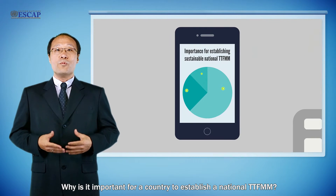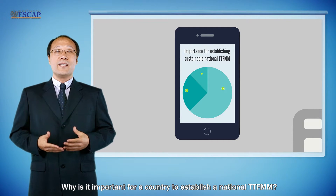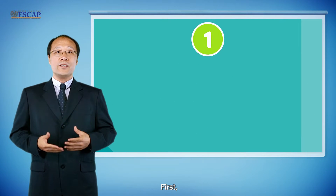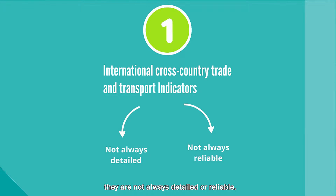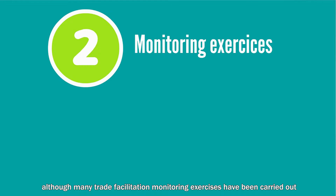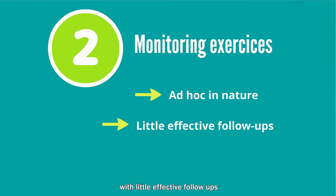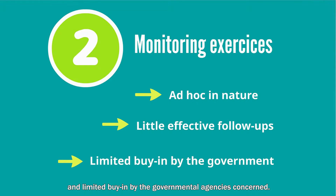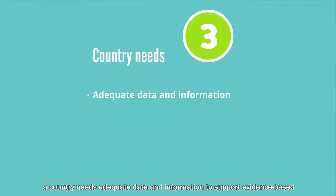Let's look at the fundamental question: why is it important for a country to establish a national TTFMM? There are mainly three reasons. First, while some international cross-country trade and transport indicators are available and useful, they are not always detailed or reliable. Second, although many trade facilitation monitoring exercises have been carried out in developing countries, such efforts are often ad hoc in nature, with little effective follow-up and limited buy-in by the governmental agencies concerned. Third, a country needs adequate data and information to support evidence-based policymaking on trade and transport facilitation.